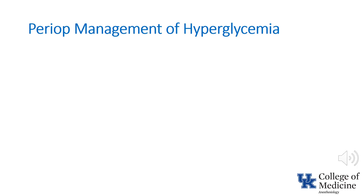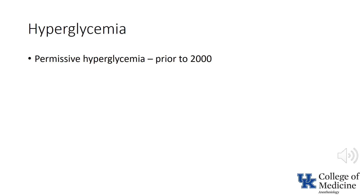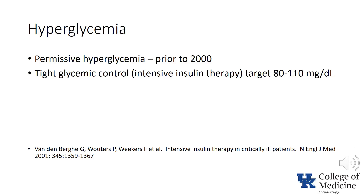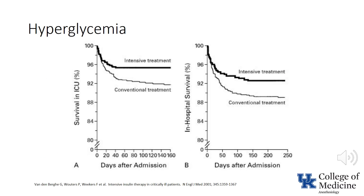Now let's look at the perioperative management of hyperglycemia. Prior to 2000, it was common to not treat hyperglycemia unless the blood sugar was greater than 250. In 2001, the Vandenberg study reported a decrease in mortality in ICU patients if the serum glucose was maintained between 80 and 110 mg per deciliter compared with a target of 180 to 200. Despite many people pointing out the limitations of this study — for example, it was not possible in routine clinical care to duplicate the intensity with which patients were monitored — several government agencies and the American Diabetes Association adopted the recommendations and used them as an indicator of quality.